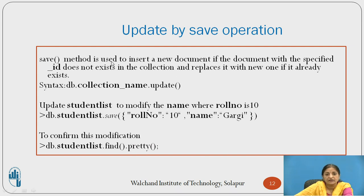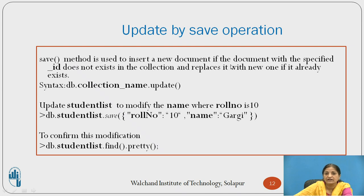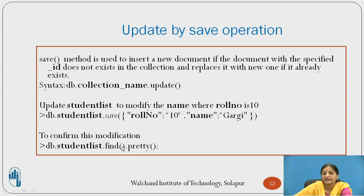Update can also be done using the save() method. The save method inserts a new document if the document with the specified ID does not exist in the collection, and replaces it with a new one if it already exists. The syntax is db.collectionname.save(). To confirm the modification, use the find query to display all documents of the collection.